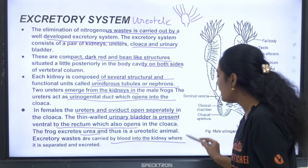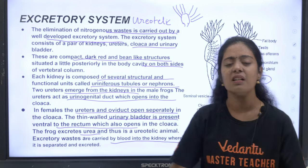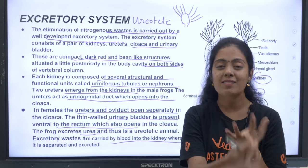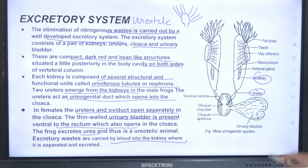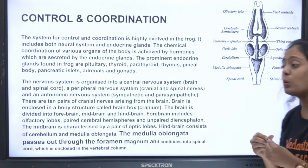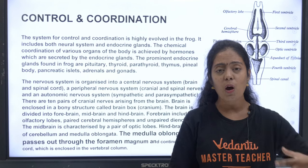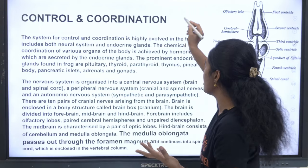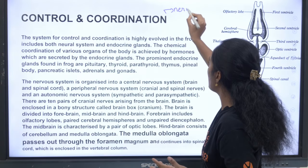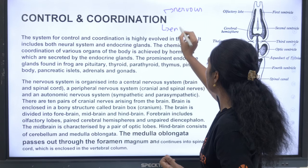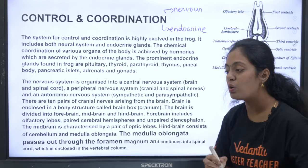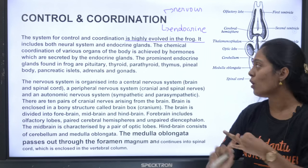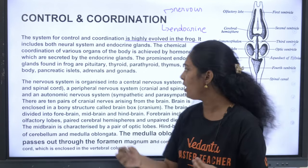Excretory wastes are carried by the blood into the kidney where they are filtered and excreted. The three steps in excretion are filtration, reabsorption, and secretion. Control and coordination involves both the nervous system and the endocrine system, and both are involved in the control and coordination of the body.